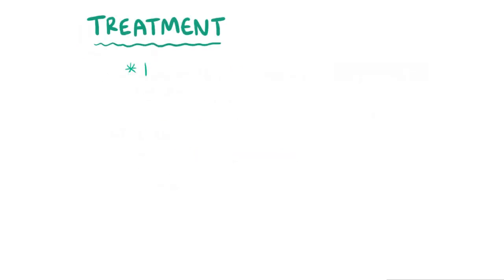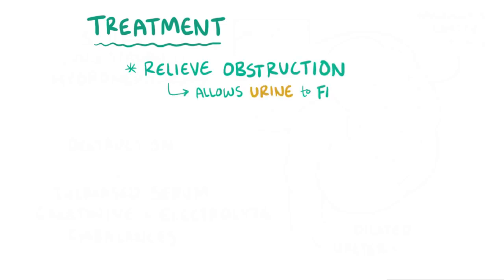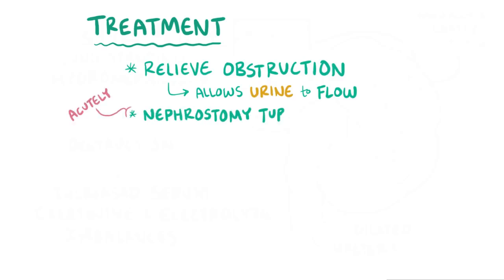Hydronephrosis treatment focuses on relieving the obstruction and allowing the urine that might have accumulated behind the obstruction to flow out normally. Acutely, a nephrostomy tube can be used, which is a plastic tube inserted through the skin into the renal pelvis, and this allows the accumulated urine to drain out.